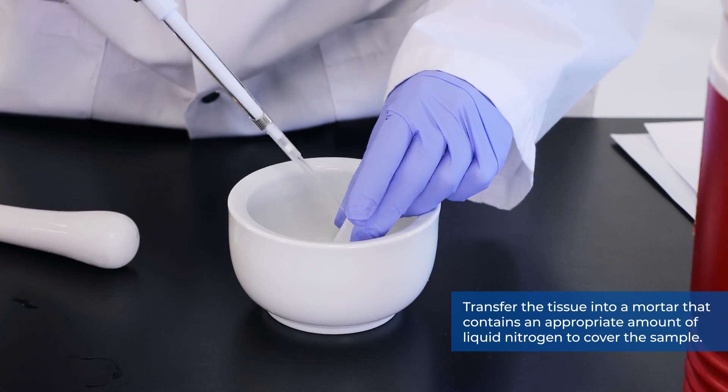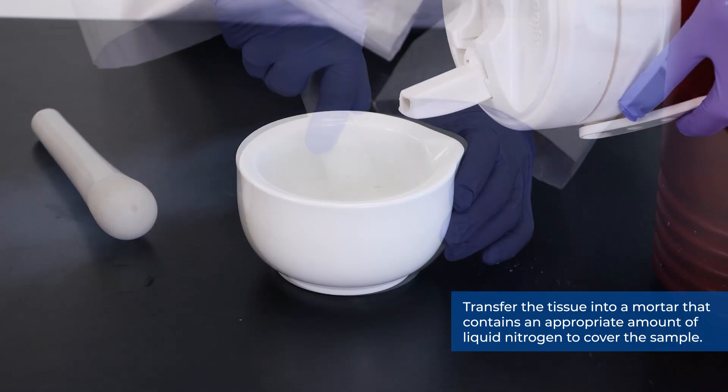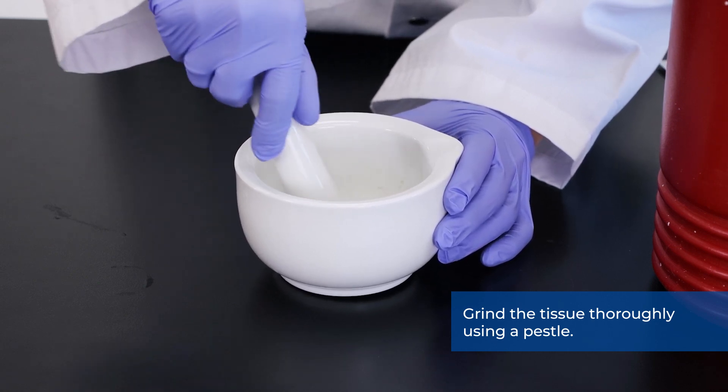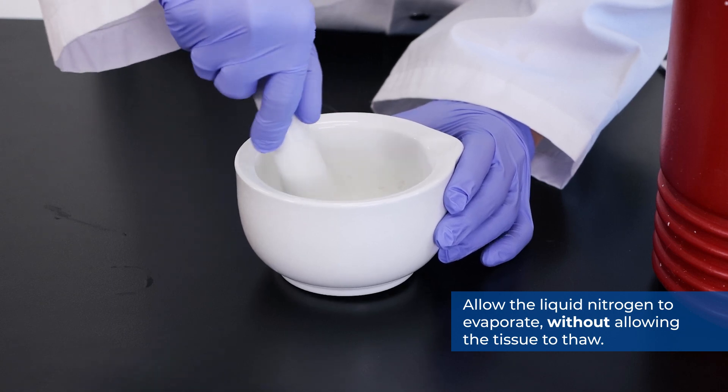Transfer the tissue into a mortar that contains an appropriate amount of liquid nitrogen to cover the sample. Grind the tissue thoroughly using a pestle. Allow the liquid nitrogen to evaporate without allowing the tissue to thaw.